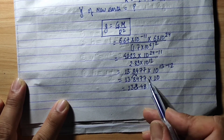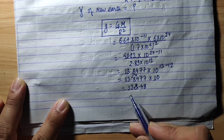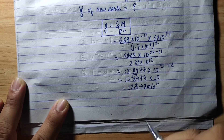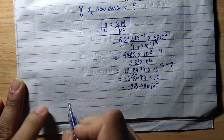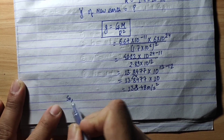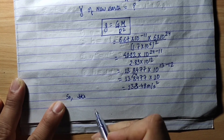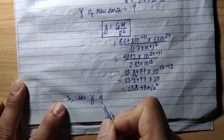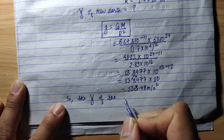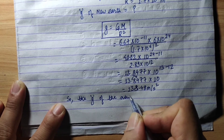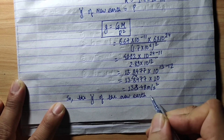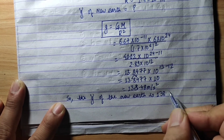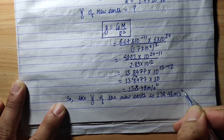138.477, rounded off, is equal to 138.48 meters per second squared. So the acceleration due to gravity of the new Earth is 138.48 m/s².